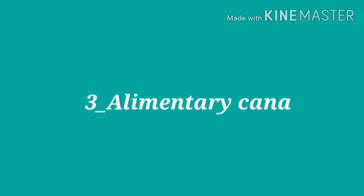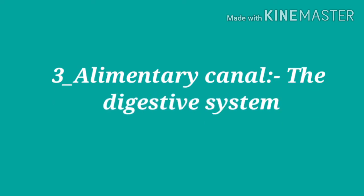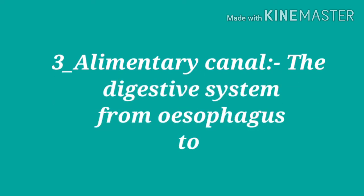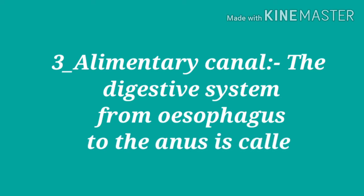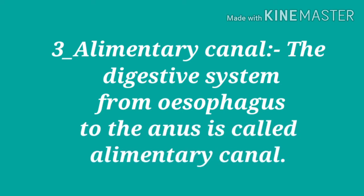Next, alimentary canal. The digestive system from oesophagus to the anus is called alimentary canal. Dekhye, alimentary canal कहते हैं — जब पाचन की तंत्र क्रिया होती है, तो ऊपर वाली नली oesophagus से लेकर नीचे का part anus तक, वो alimentary canal कहलाता है.